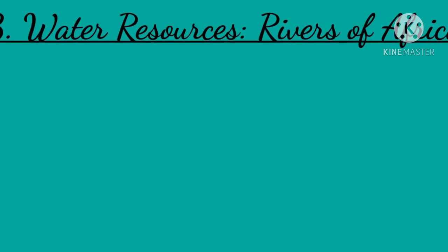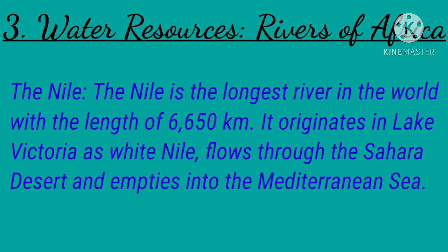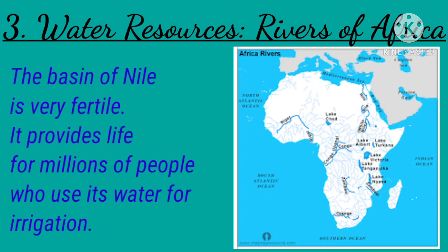Africa has four mighty rivers: the Nile, the Congo, the Niger, the Zambezi, and the Senegal. The Orange and the Limpopo are other important rivers. The Nile is the longest river in the world, with a length of 6,650 kilometers. It originates in Lake Victoria as the White Nile, flows through the Sahara Desert, and empties into the Mediterranean Sea. The Nile basin is very fertile and provides life for millions of people who use its water for irrigation.